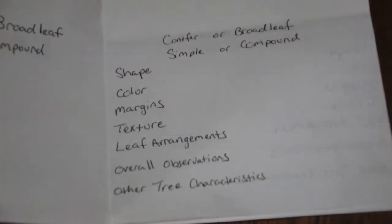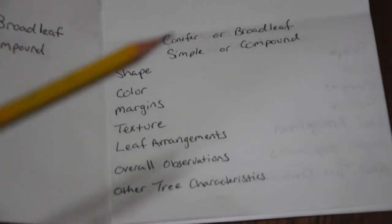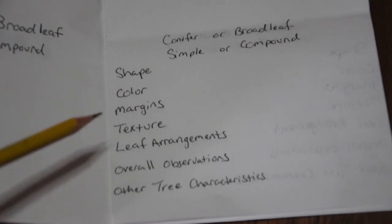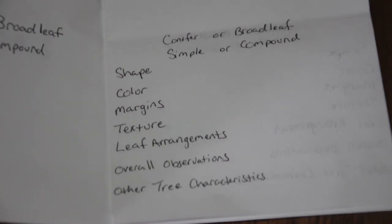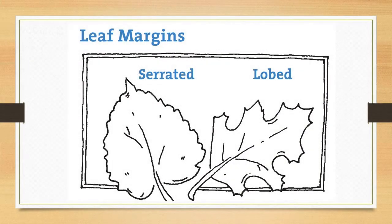After making observations about the leaf shape, you'll want to note its color. The next thing we'll take a look at are the leaf's margins. The edges, or margins, of leaves can also provide clues to the tree's identity. For example, some leaves have teeth, or are serrated along their margins, while some leaves are lobed, and some leaf margins are entirely smooth.